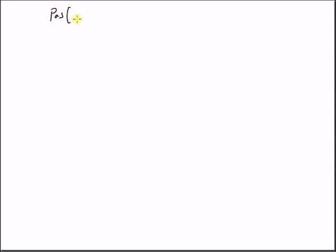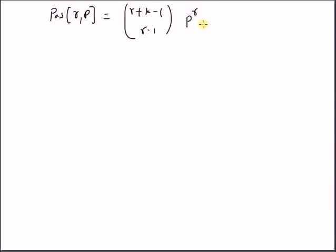Hello, welcome back. In this short video, let us look at the properties of the Pascal distribution for a discrete random variable. The Pascal distribution is defined as: P(r, p) = (r + k - 1 choose r - 1) multiplied by p^r times (1 - p)^k, where k = 0, 1, 2, and so on.